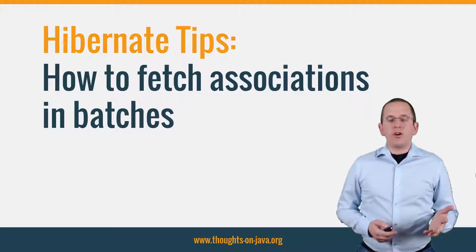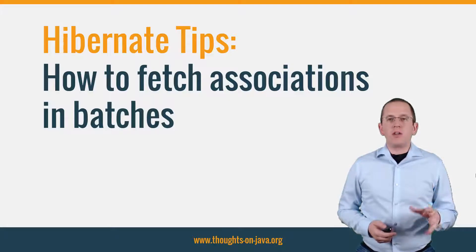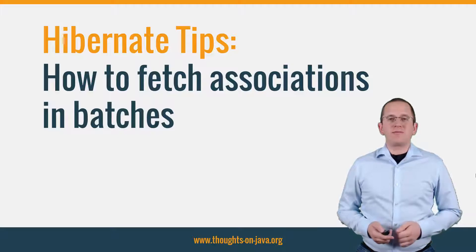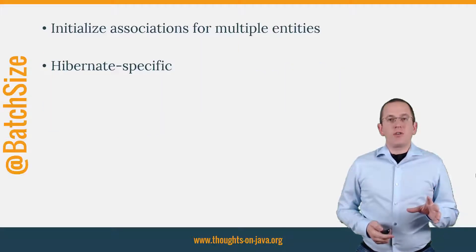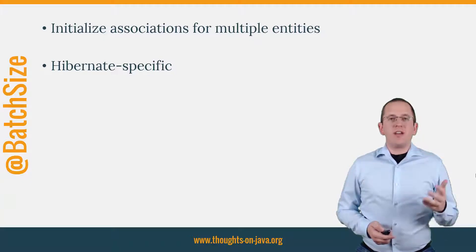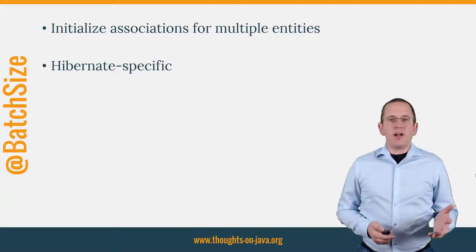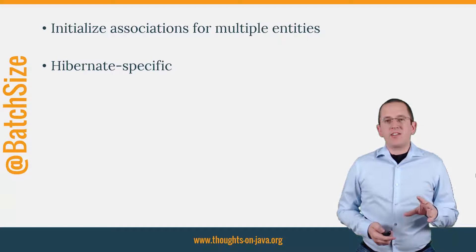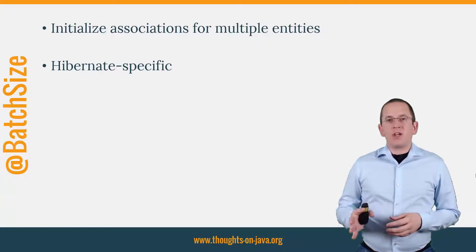But if you can't use these options, or if the created Cartesian product gets too big, there's also another Hibernate-specific option. You can annotate the association with Hibernate's @BatchSize annotation. It tells Hibernate to initialize the relationship of multiple author entities in batches. That's not as efficient as a JoinFetch clause or an entity graph, but it's better than loading the associations one by one.